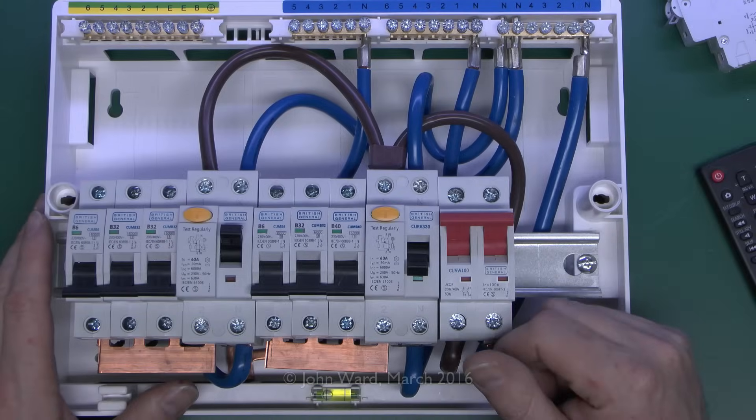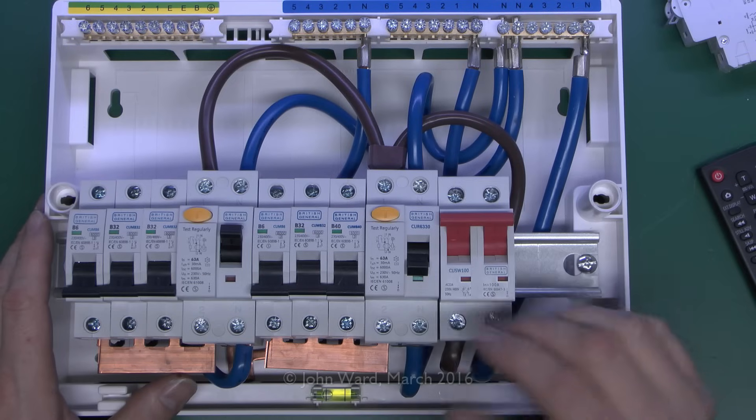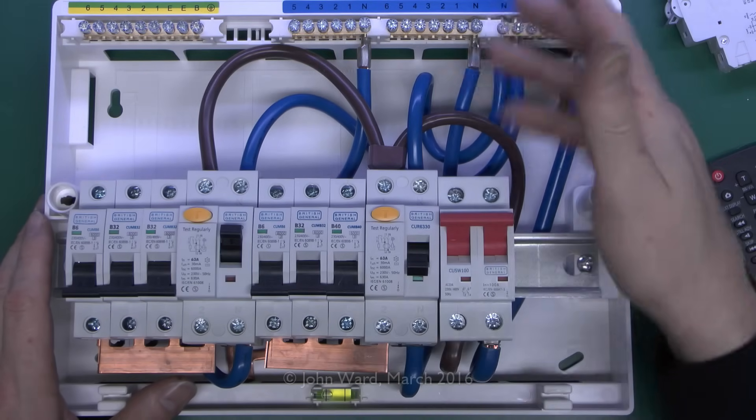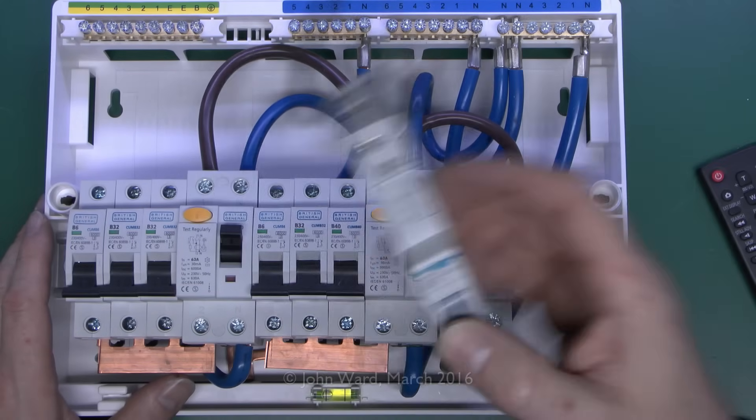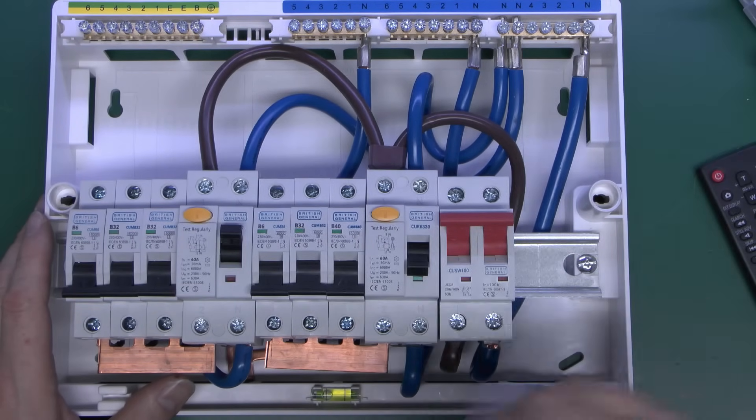Now this is inside that cheap consumer unit and of course this is set up with the two RCDs and all of the adjustable horrible wiring there. So to show you how an RCBO would fit in we first want you to get rid of most of this stuff.